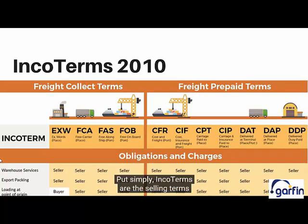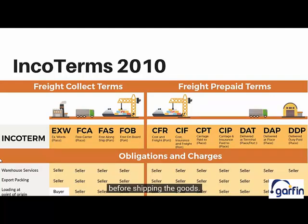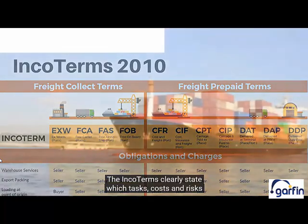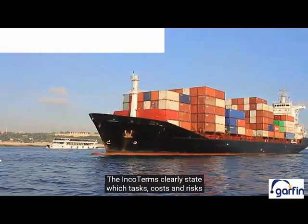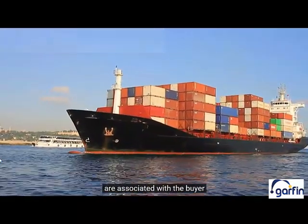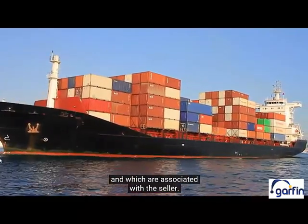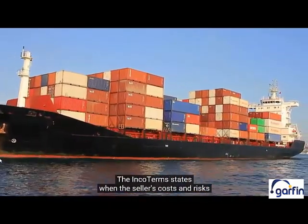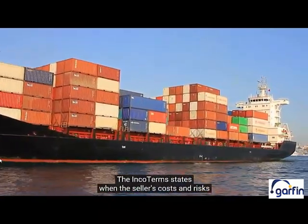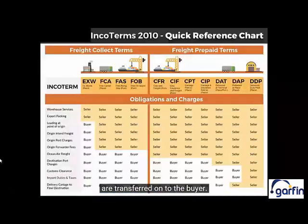Put simply, Incoterms are the selling terms the buyer and seller of goods both agree to before shipping the goods. The Incoterms clearly state which tasks, costs, and risks are associated with the buyer and which are associated with the seller. The Incoterms state when the seller's costs and risks are transferred onto the buyer.